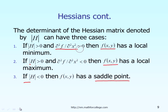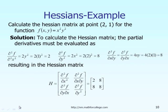The Hessian matrix, which is the second derivative, is also very important. Let me give you a quick numerical example to explain how to calculate the Hessian, or the second matrix derivative. Suppose I give you a function f depending on both variables x and y — let's say x squared times y squared.